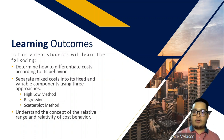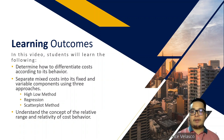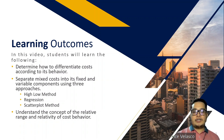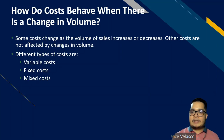The second objective is for you to separate mixed costs into their fixed and variable components using three approaches: the high-low method, regression, and the scatterplot method. Lastly, we need to understand the concept of the relevant range and the relativity of cost behavior, which is an important assumption in cost-volume profit analysis.